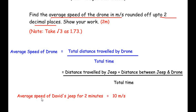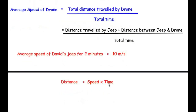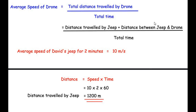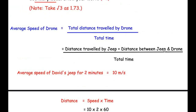Finding the first part — distance traveled by jeep: the average speed of David's jeep was 10 meters per second. Using distance = speed × time, with speed = 10 m/s and time = 2 minutes = 2 × 60 = 120 seconds. Distance = 10 × 120 = 1200 meters. So the distance traveled by the jeep is 1200 meters.